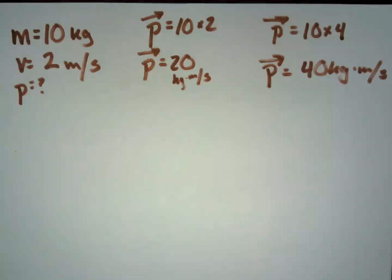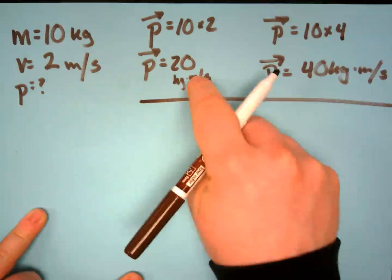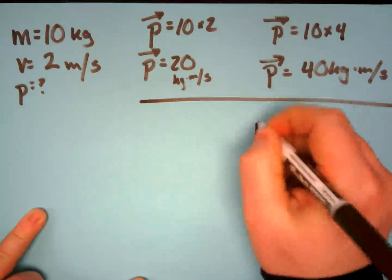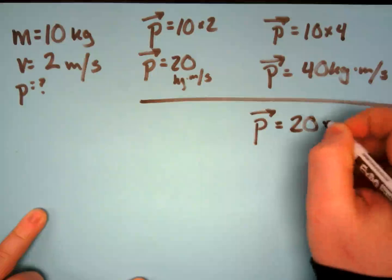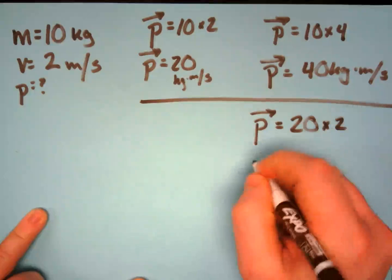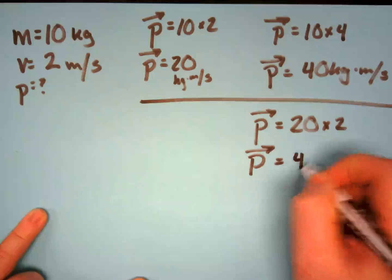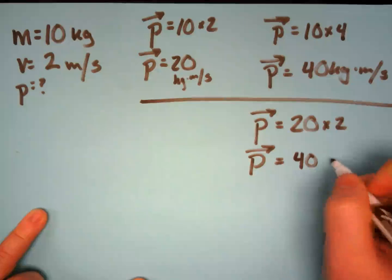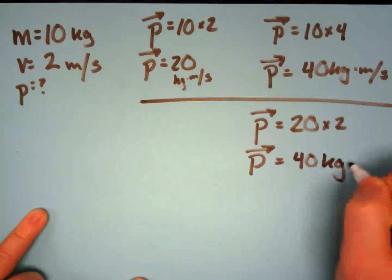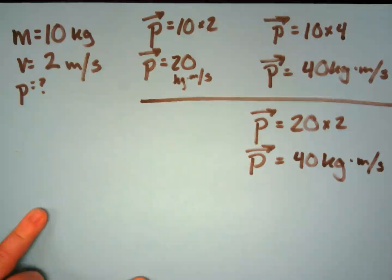If the mass is doubled, keeping the same idea: that would be 20 times 2. It's the same thing — if the mass is doubled, then our momentum has doubled. Easy peasy.